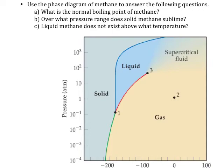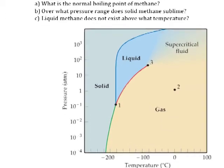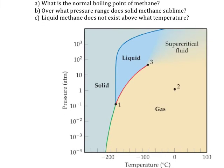The first thing they ask us is what is the normal boiling point of methane? When they say normal, what they mean is at normal pressure, which is one atmosphere of pressure. We want to figure out the boiling point at one atmosphere of pressure. Boiling point is the conversion between a liquid and a gas.